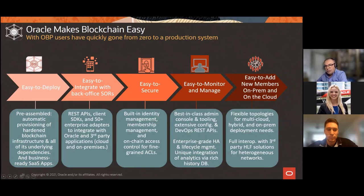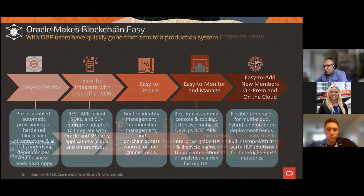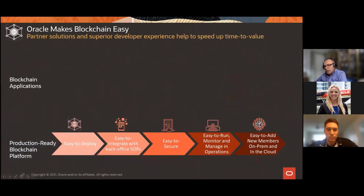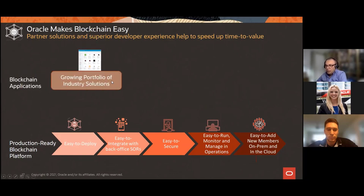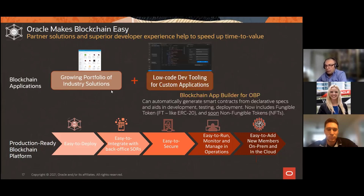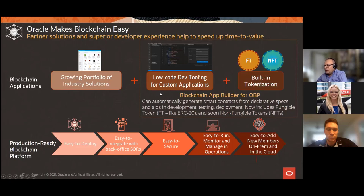Beyond infrastructure, there's still a challenge with blockchain application skills. We've addressed this in two ways: partnering with companies that have pre-built industry solutions for many verticals, and investing in the low-code development tool called Blockchain App Builder. This tool lets you automatically generate smart contracts from a specification, with tokenization built in for fungible tokens. Non-fungible token support will be available in a few months.